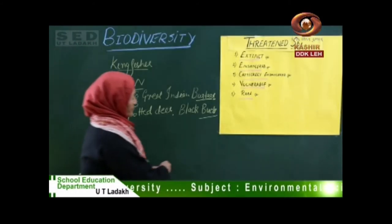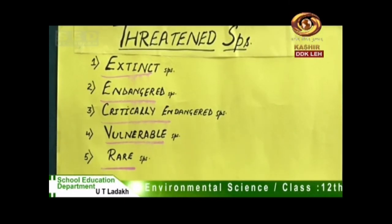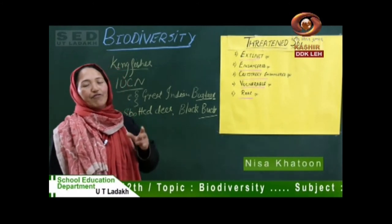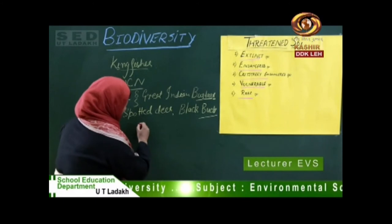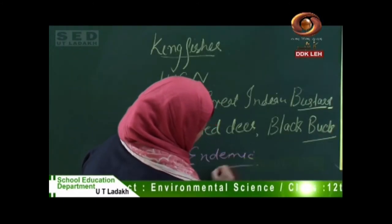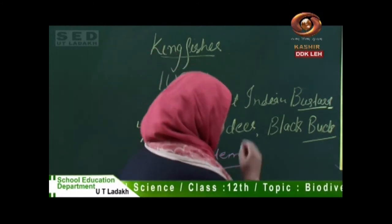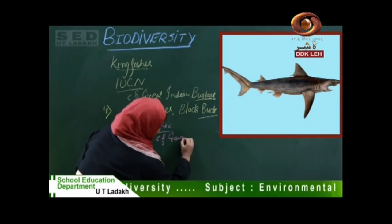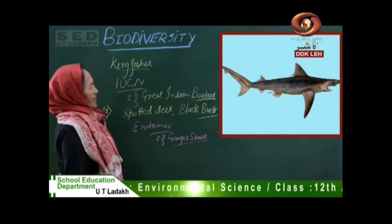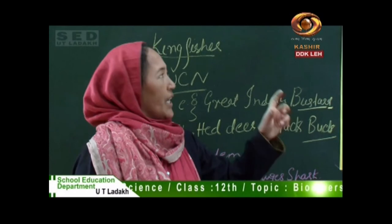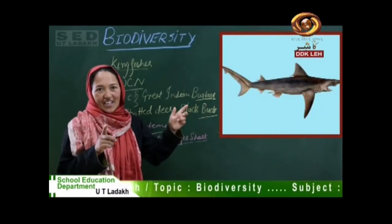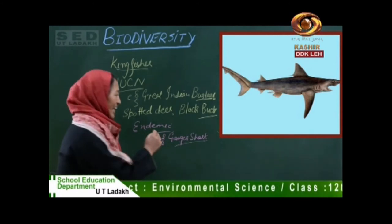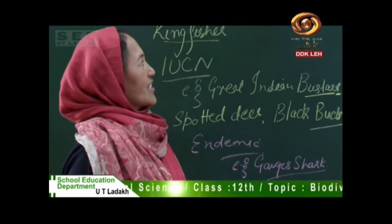The last one is rare species. Rare species are those which are very rare in number but are found in a restricted geographical area — these species are endemic, found only in a localized area. For example, the Ganges shark is a rare species found in fresh water and is valued for its oil. If not conserved, they can become even rarer, though not immediately extinct. This is how we complete the section on threatened species.